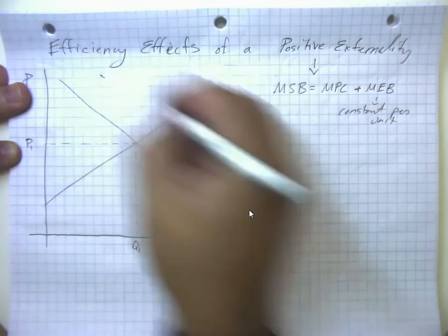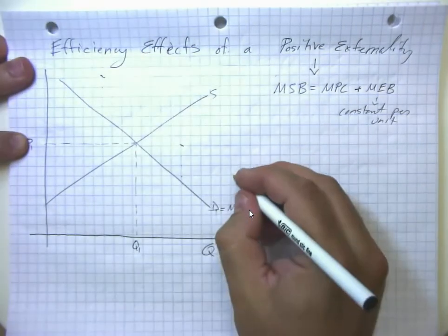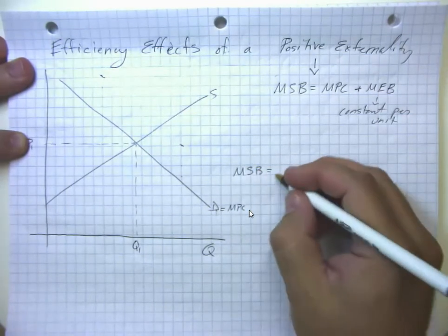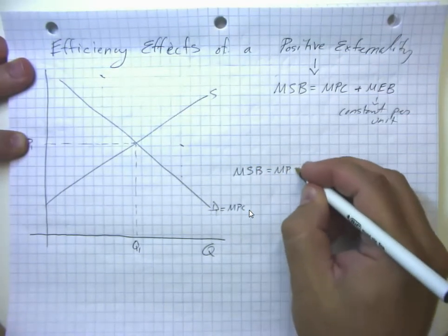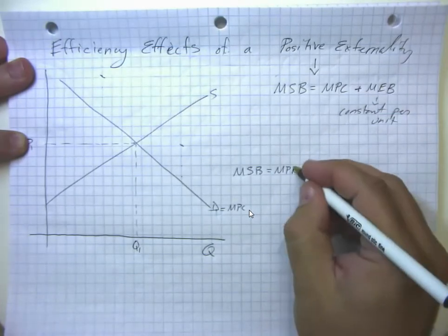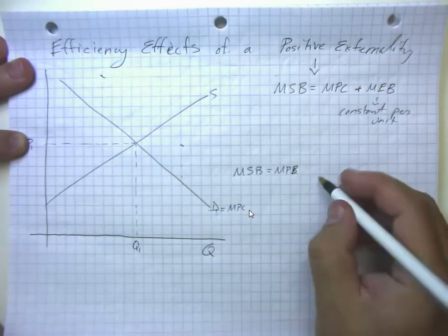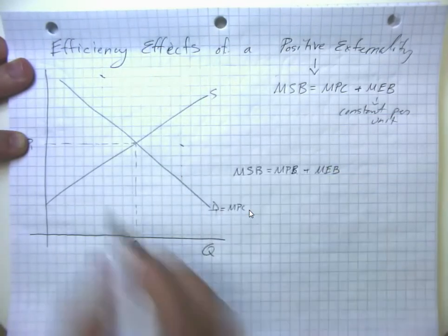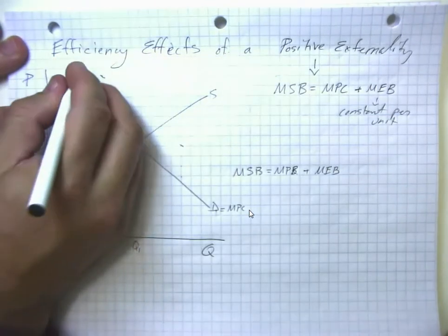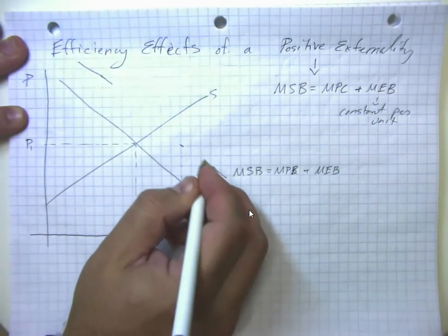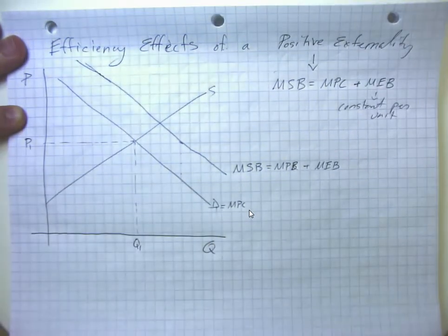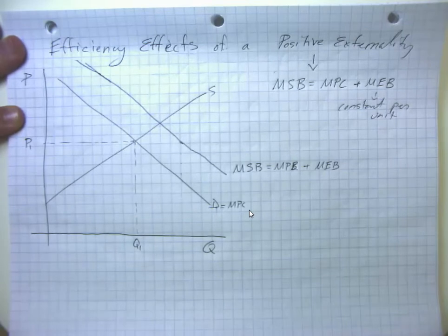If we were to think about what curve would reflect the total marginal social benefit, it would be the marginal private benefit here plus this marginal external benefit of four squares. We will challenge my art skills. So we would have a curve like that that would reflect the marginal social benefit of producing this product.